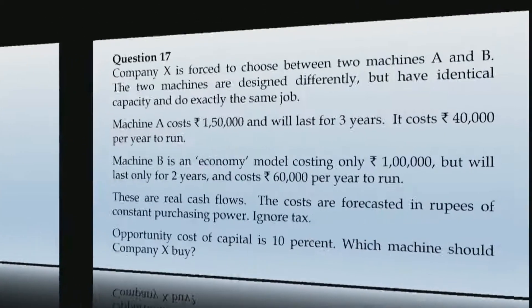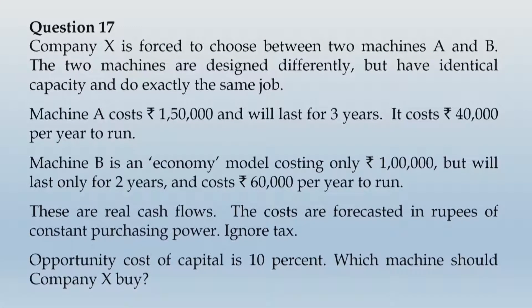Question 17: Company X is forced to choose between two machines, A and B. The machines are designed differently but have identical capacity and do exactly the same job. Machine A costs 1,50,000 and will last three years, costing 40,000 per year to run. Machine B costs 1,00,000 but lasts only two years and costs 60,000 per year to run. These are real cash flows in rupees of constant purchasing power. The opportunity cost of capital is 10 percent. Which machine should company X buy?